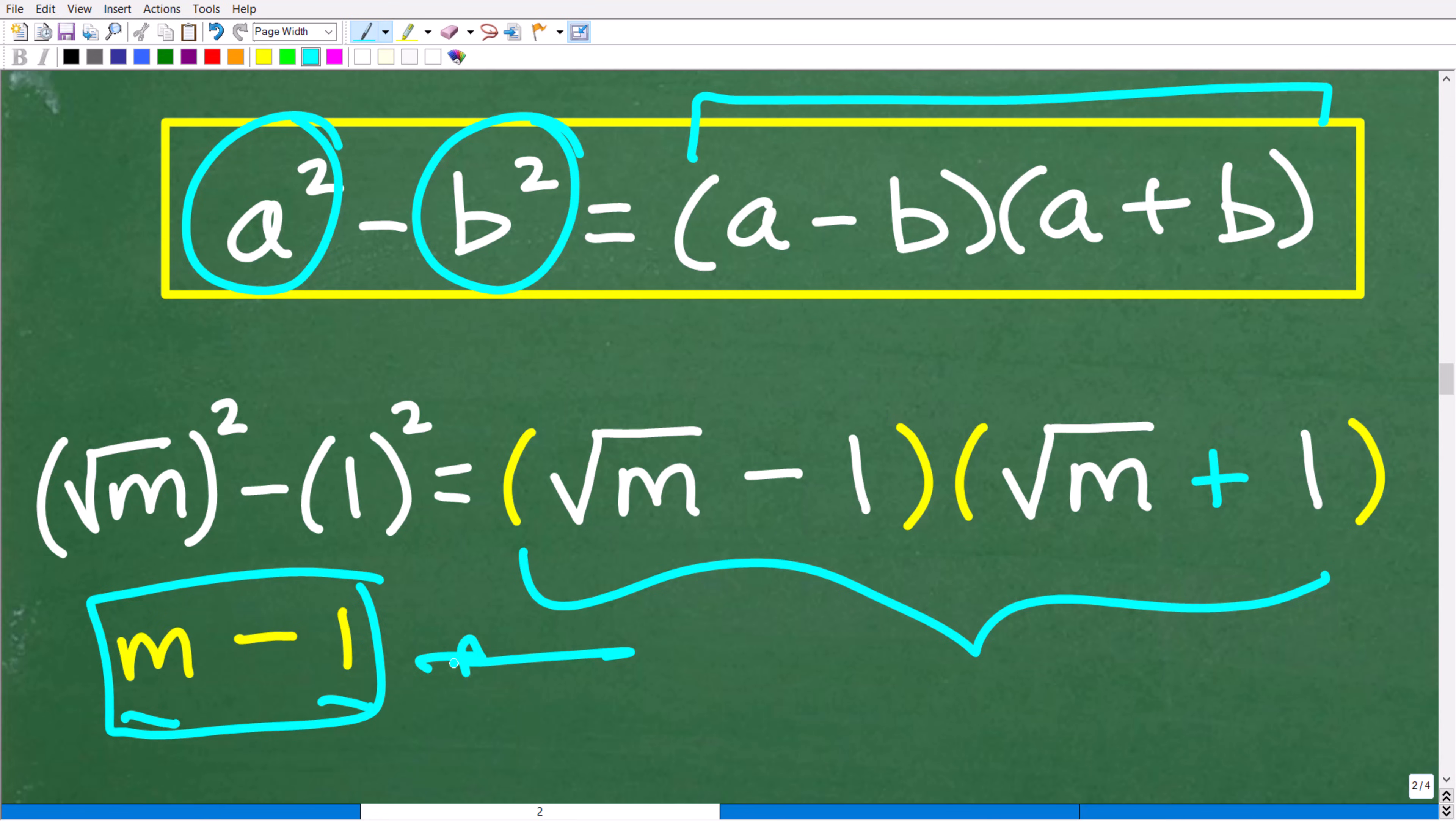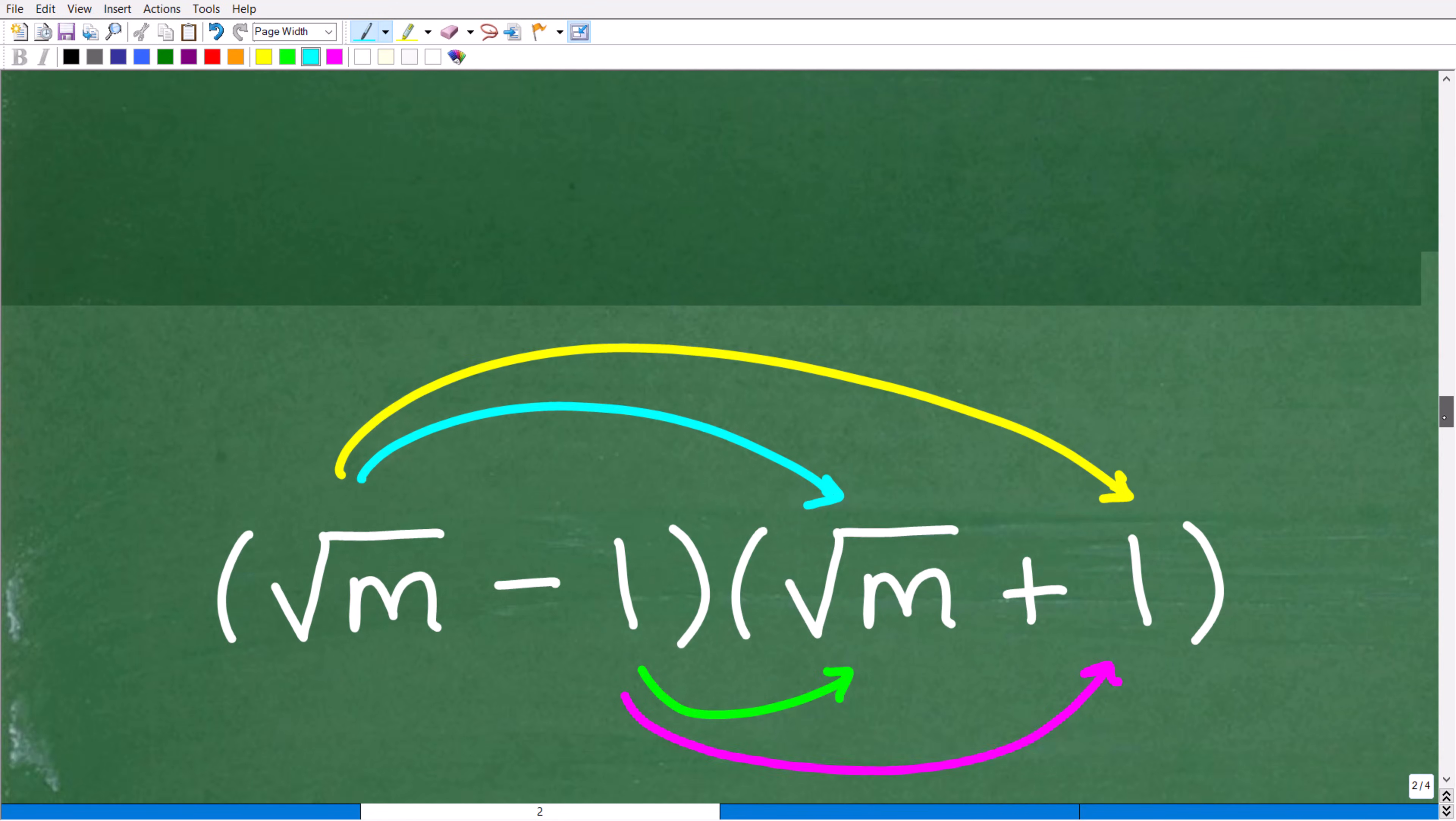You can see we barely did any work here. So that's why you want to understand the difference of two squared formula, especially when you're dealing with radical expressions and conjugate problems. It just makes our life a lot easier. But this is not the only way we could have figured this out. We could have used the FOIL method to figure out square root of m minus 1 times the square root of m plus 1. And let me go ahead and show you that method right now because we're still going to get m minus 1. But let's go ahead and take a look at the work.